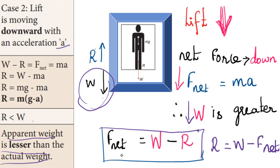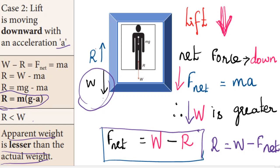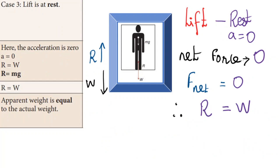For the second case, the net force is downward, so the actual weight W dominates. F net = W minus R, therefore R = W minus F net. Substituting: R = mg minus ma, so R = m(g minus a). The apparent weight R is less than the actual weight W in this case.